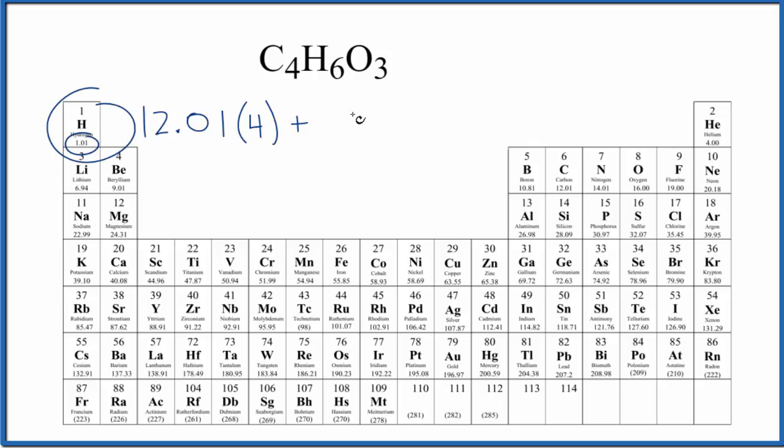Hydrogen, 1.01 grams per mole, and we have six hydrogen atoms. Finally, oxygen, 16.00 grams per mole, and we multiply that times three.